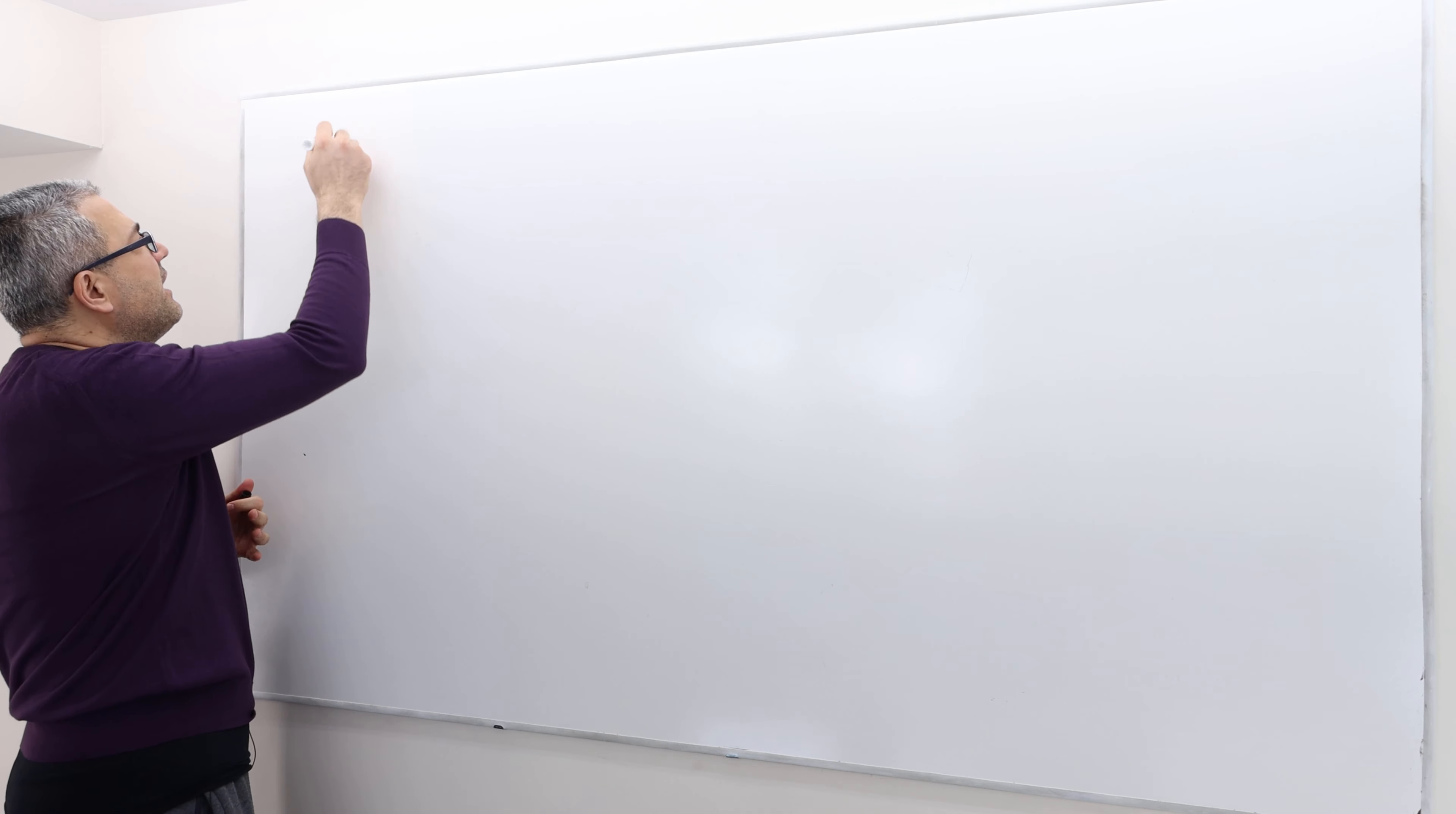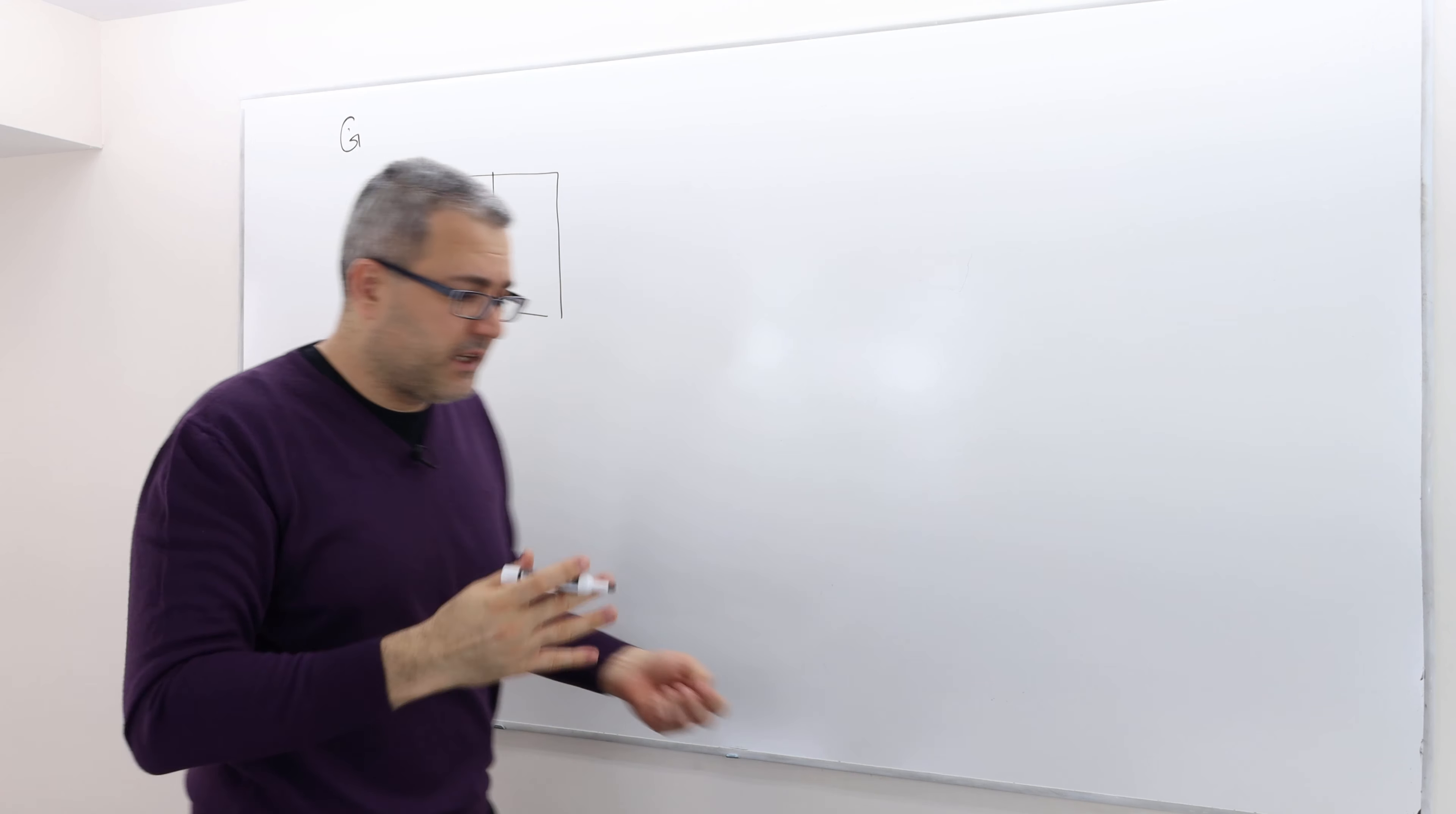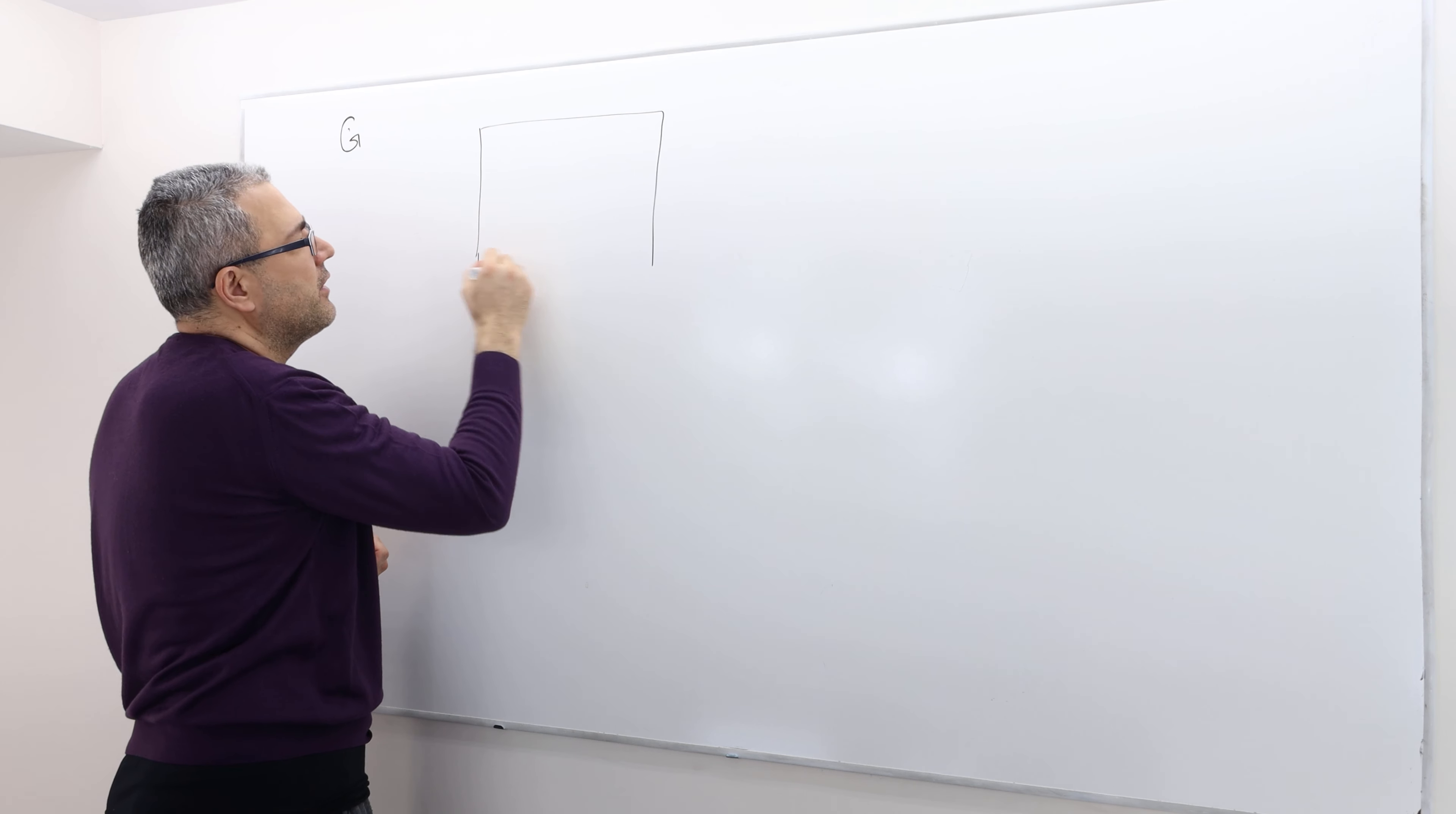So let's consider any simultaneous move game or strategic form game G. In order to make things a bit more concrete, I'm going to give you an even simpler example, two by two. I don't really need three by three matrices.